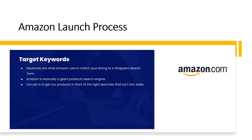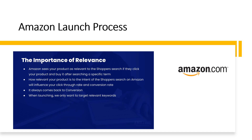Let's talk about target keywords. Keywords are what Amazon uses to match your listing to a shopper's search term. In fact, Amazon is basically a giant product search engine. Your job is to get your product in front of the right searches, and that gets turned into sales. Amazon sees your product as relevant to the shopper's search if the shopper clicks your product and buys it after searching for that specific term. How relevant your product is to the intent of the shopper's search will influence your click-through rate and conversion rate. When launching, we only want to target highly relevant keywords.